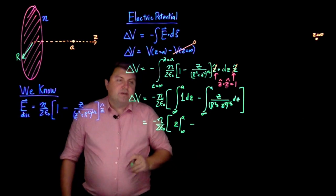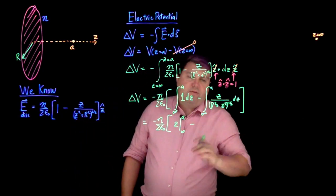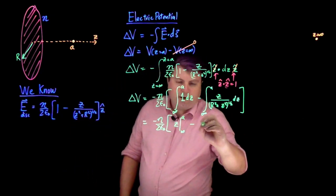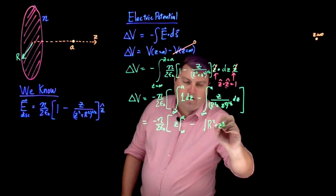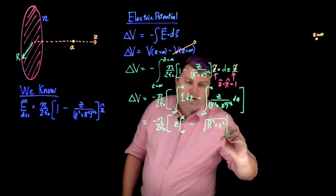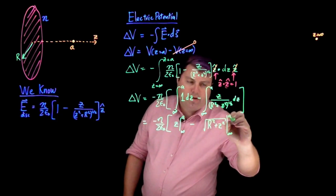And then my next integral, z dz over r squared plus z squared. If I do all of that, I'm going to get the square root of r squared plus z squared evaluated from infinity to a.